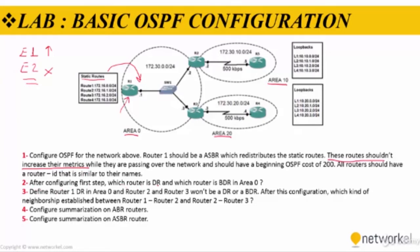After configuring the first step, we are going to check which router is DR and which is BDR for area 0. Then we are going to define Router 1 as DR in area 0 and define Router 2 and Router 3 not to be DR or BDR. After this configuration, we'll check what kind of neighborship is established between routers 1, 2, and 3. Then we are going to configure summarization on the ABR, which is Router 2 and Router 3.